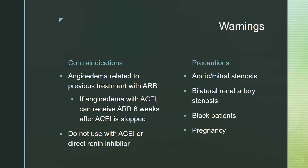One of the most important contraindications of these drugs is angioedema related to previous treatment with ARBs. However, if a patient experienced angioedema with an ACE inhibitor in the past, they can receive an ARB six weeks after the ACE inhibitor is stopped. Another contraindication is do not use with ACE inhibitors or direct renin inhibitors simultaneously. Some of the precautions for these drugs are aortic or mitral stenosis, bilateral renal artery stenosis, use in Black patients, and pregnancy.